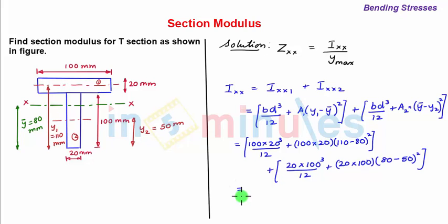So upon calculation we get value as 5.33 into 10 to the power 6 mm to the power 4.